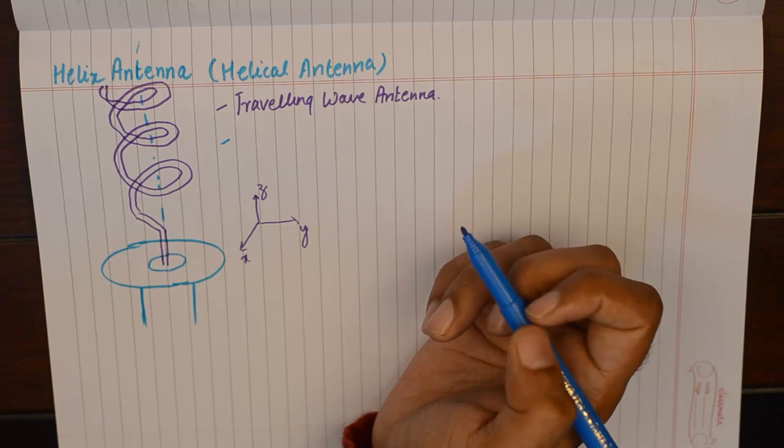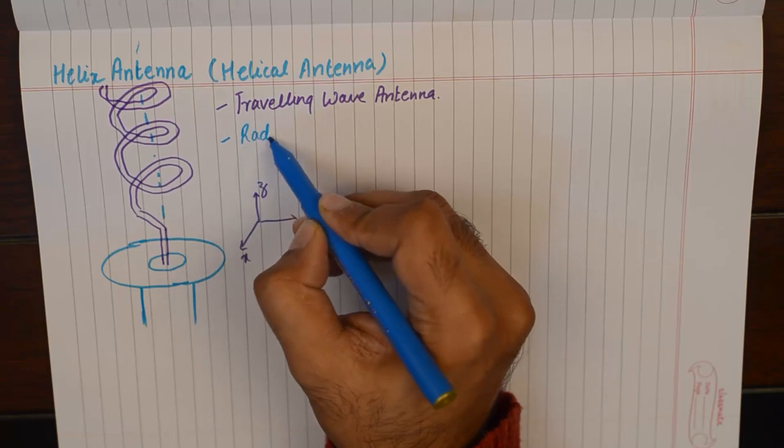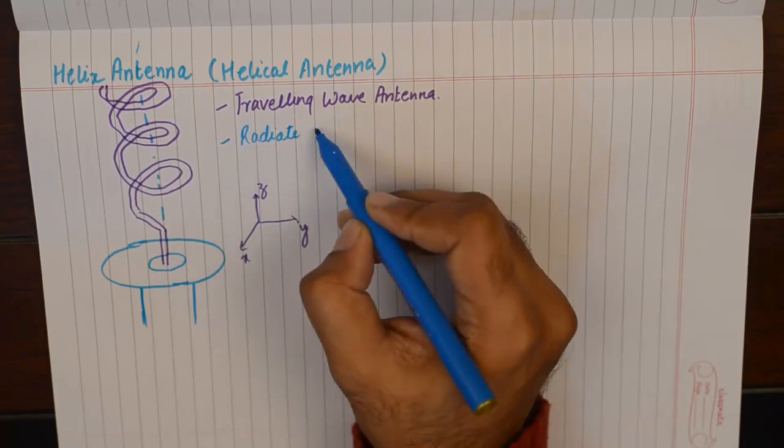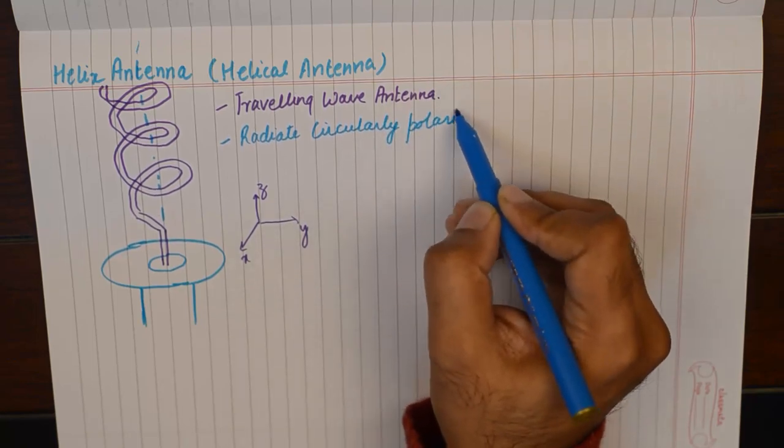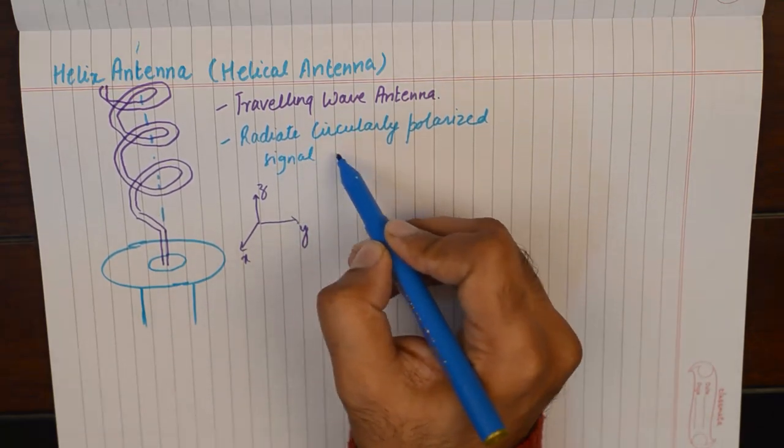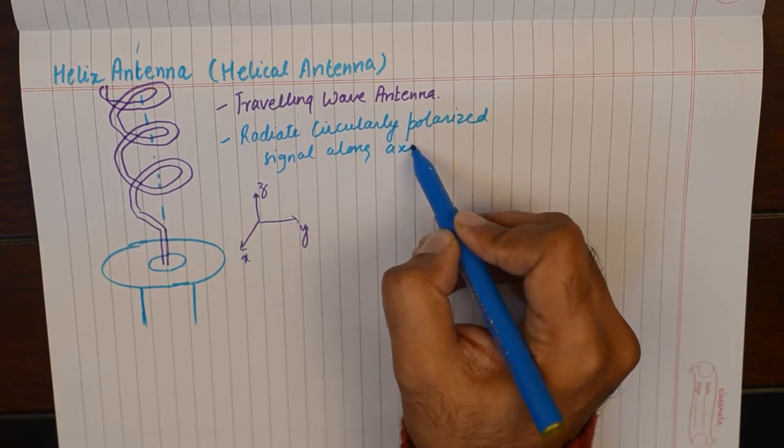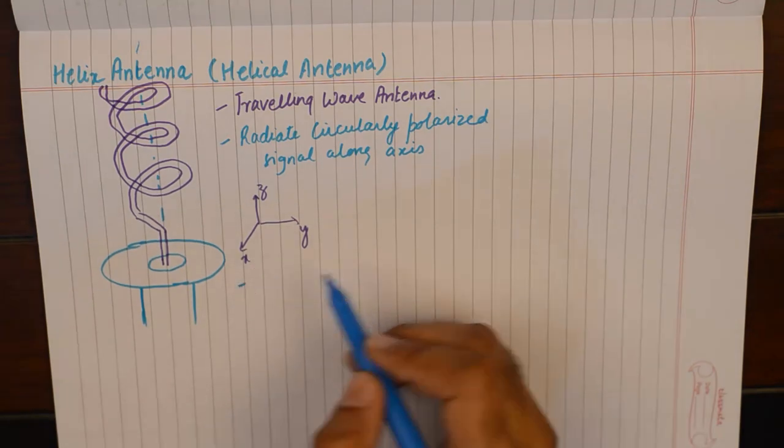The second most important thing about helix antenna is that it will radiate circularly polarized signal along axis. These are basically two points summed up in one, and it's a wide band antenna with real input impedance.